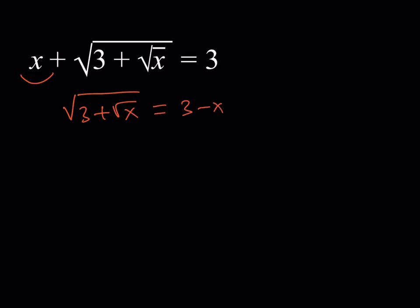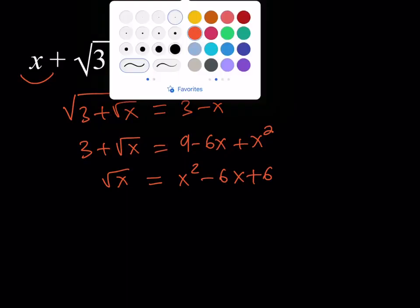And then square both sides, obviously, you want to get rid of the radicals, but there are two of them. So this should give you 3 minus x quantity squared, which is 9 minus 6x plus x squared. Then you can arrange this a little bit, and that's going to give you square root of x is equal to x squared minus 6x plus 6.